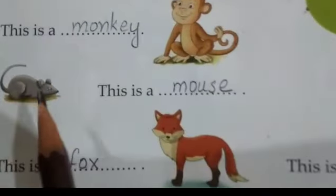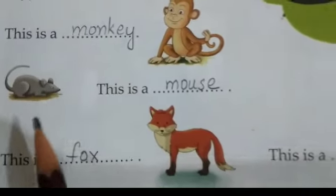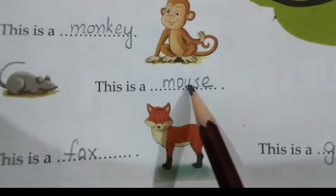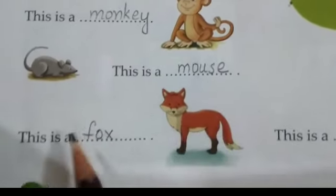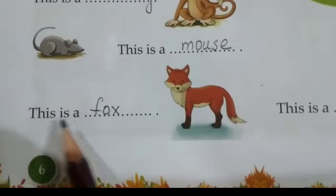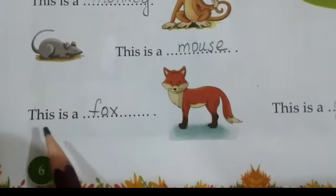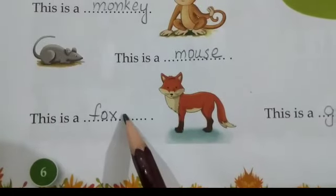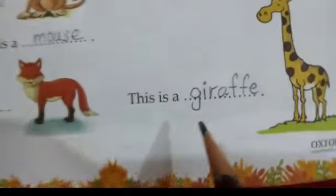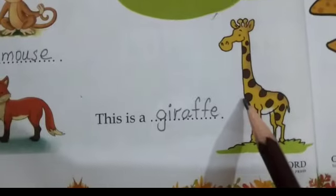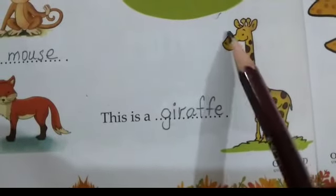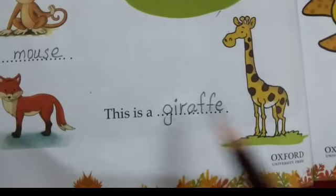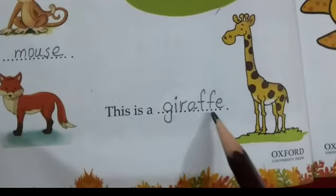What is this? Mouse. This is a mouse. M-O-U-S-E. Mouse. Fox. This is a fox. Yeh ek lomdi hai. F-O-X. Fox. The last one — what is this? A long neck animal. This is a giraffe. Yeh ek zaraafa hai.